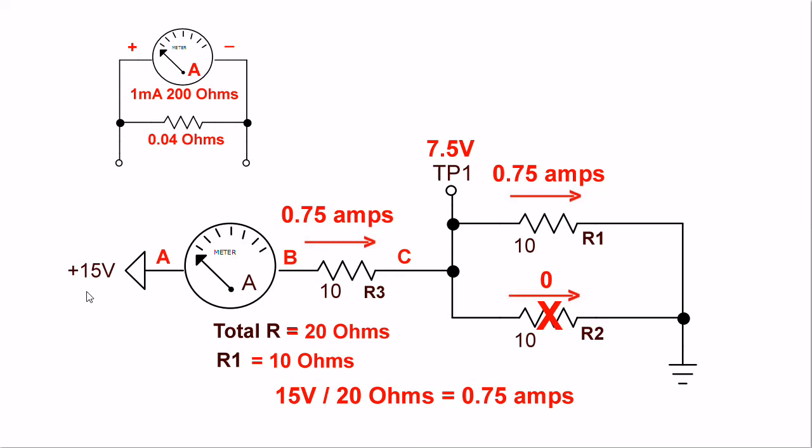To actually calculate the voltage without even having to measure it with a voltmeter, read your current. Current times resistance gives you voltage. 0.75 amps times 10 ohms is 7.5 volts from B to C.